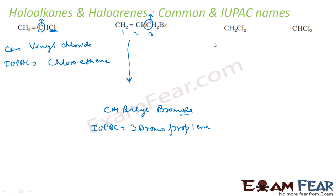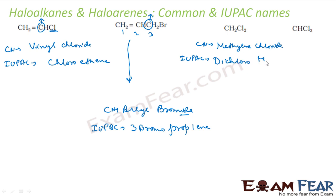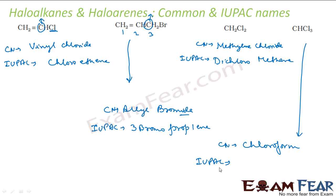Let's take CH2Cl2. The common name is methylene chloride — there is no rule for common names, that's just what it's called. For the IUPAC name: 2 chlorines on methane — so it is dichloromethane. For CHCl3, the common name is chloroform — again, no rule, just how scientists call it. For the IUPAC name: 3 chlorines on one carbon — trichloro — and one carbon is methane — so it is trichloromethane.